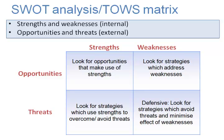Rearranging SWOT into the TOWS matrix can be particularly useful. If we have an opportunity and with that we can match a strength, then we can use that strength to make the best of the opportunity. If there is an opportunity but we are weak, then before we can make use of that opportunity, we have to make it good — so there might be an opportunity to take over a competitor, but with no money, the first thing to do might be to raise finance. If there is a threat and we have a strength with which we can fight it, that's a good position. However, what we don't want is to have to fight a threat with a weakness — we have to find some other way of surviving.